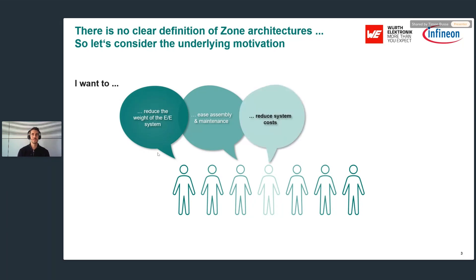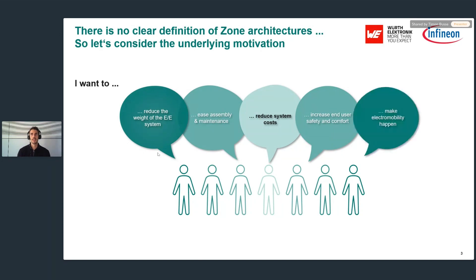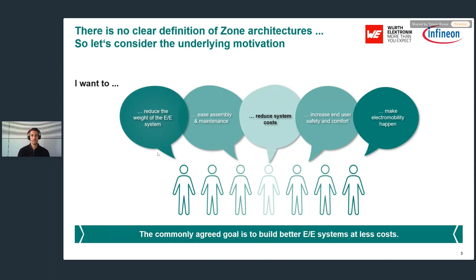A timeless classic: everyone wants to reduce system costs, and that's also a goal associated with zone architectures. It's also about providing more value for the customer — for OEMs pursuing zone architectures, the customers are the drivers, and OEMs want to provide more safety and comfort. And lastly, electromobility — OEMs want to put electric vehicles on the road. Taking all of those statements and abstracting further, the high-level goal true for any OEM is: they are trying to build better EE systems at less cost.